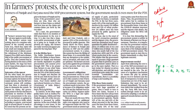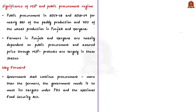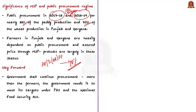The question arises — why are only farmers of Punjab, Haryana, and to some extent UP worried about these acts, but not farmers of Andhra Pradesh, Tamil Nadu, or Odisha? In 2017-18 and 2018-19, nearly 88% of paddy and 70% of wheat in Punjab and Haryana was absorbed through public procurement. In contrast, in other major paddy states like AP, Telangana, Odisha, and UP, only 40% of rice production is procured by public agencies. This shows that farmers in Punjab and Haryana are heavily dependent on public procurement and assured price through MSP.